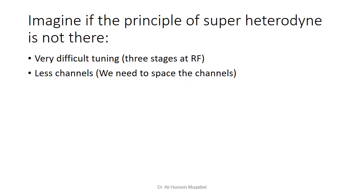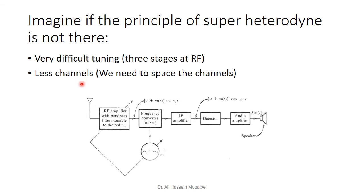What would happen without the superheterodyne principle, converting directly to baseband? There are two problems. First, it is difficult to design a filter that is both tunable and sharp. Second, to relax the filter requirements, you would need guard bands between channels in the spectrum — but guard bands mean fewer available channels. The superheterodyne receiver with its RF and IF stages elegantly solves both problems.